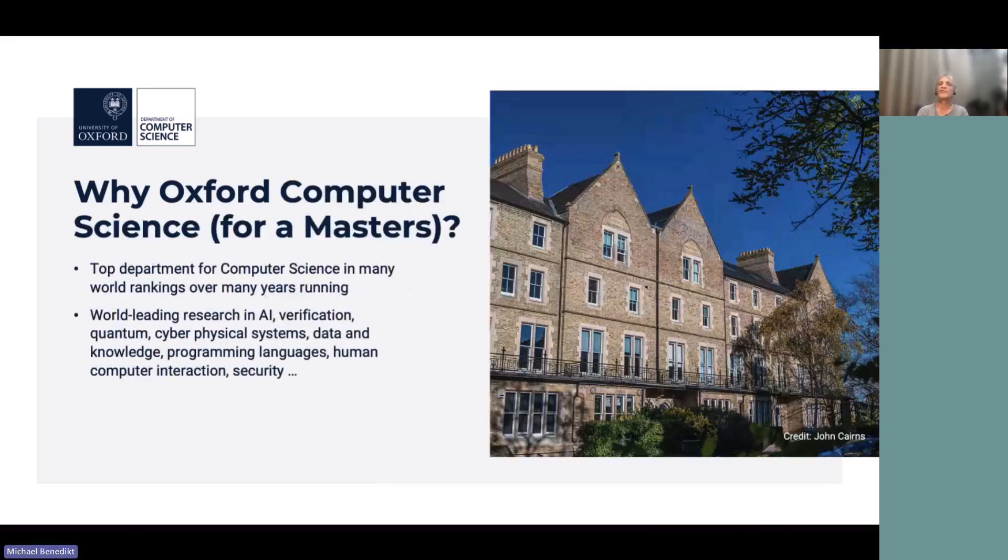So then, why Oxford computer science? Again, you've heard from Ben Morale, you've heard from Jonathan, many things about computer science at Oxford. It's one of the top departments in the world in many of the world rankings, many years running. It's got world leading research in, to name a few, AI, verification, quantum, cyber physical systems, data and knowledge, programming languages, human computer interaction, security. But from the point of view of a master's student, what does that mean? Other than prestige?